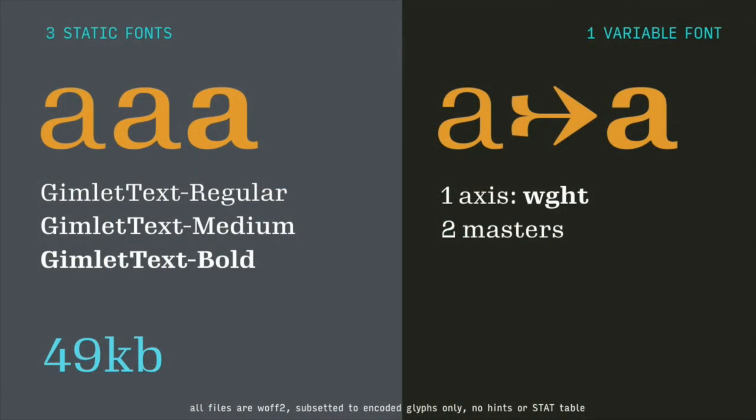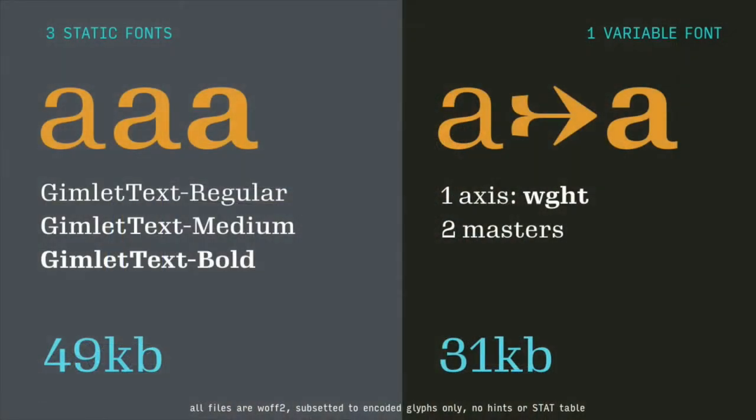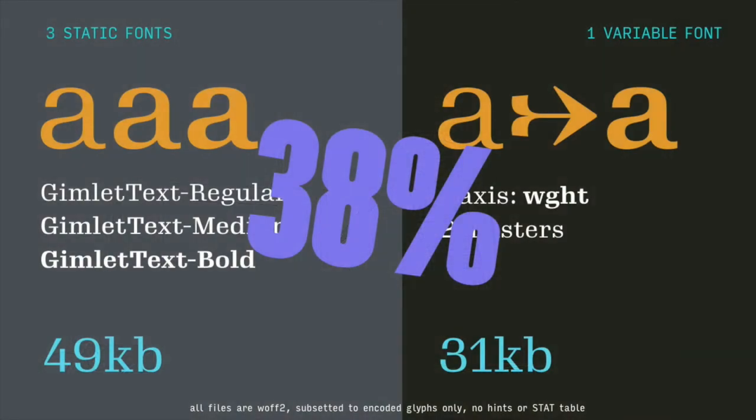Let's try a different scenario. Instead of two static fonts, I'm loading three — a regular, a medium for subheads, and a bold — that's 49k. A variable font covering that same range is also 31k. That's 38% savings. This is why it can vary so much — it really matters which styles you're using and whether you get those intermediate styles for free. The metadata is shared, but the midpoints are essentially freebies through interpolation.